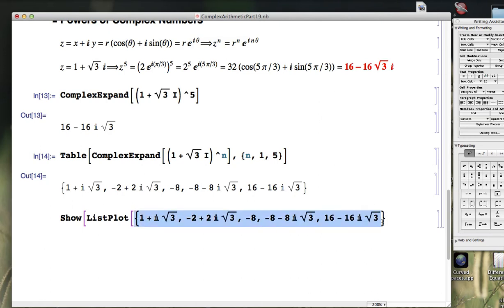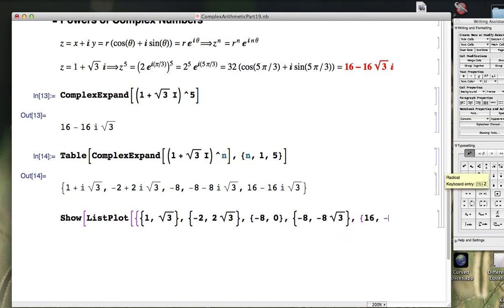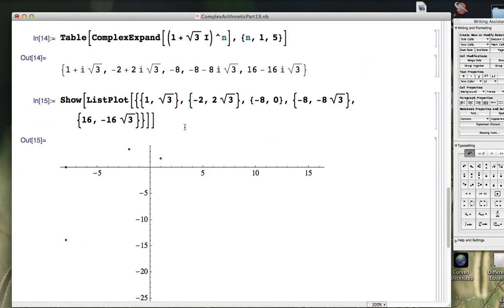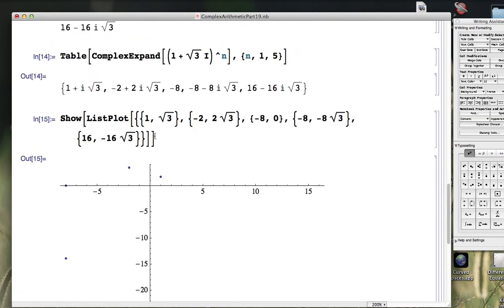I've got to convert these to points. The first point is going to be 1, square root of 3. The second point is going to be negative 2, 2 square root of 3. The next point, negative 8, 0. I'm plotting these as points in a regular plane, but ultimately thinking of it as the complex plane. That's why I'm not typing the i's in here. There they are. Let's make these bigger and red.